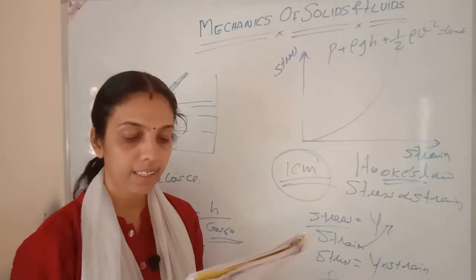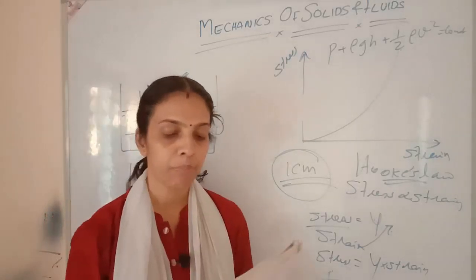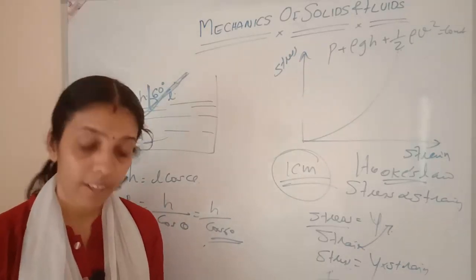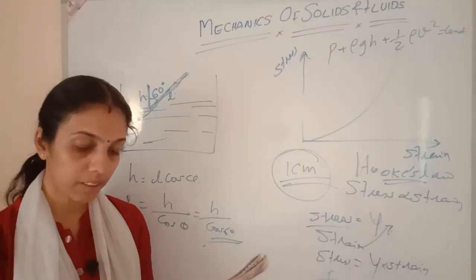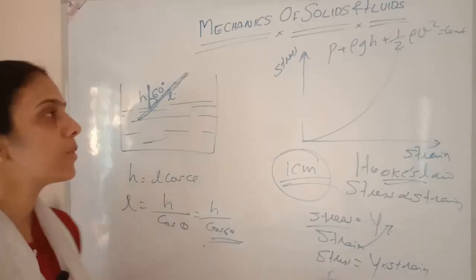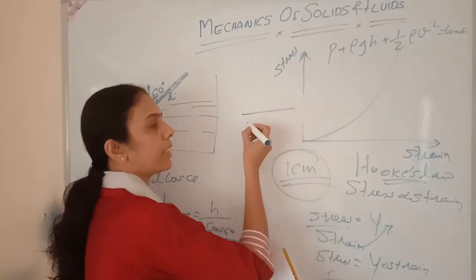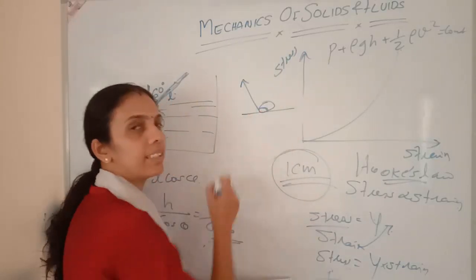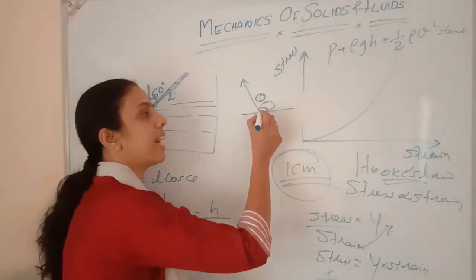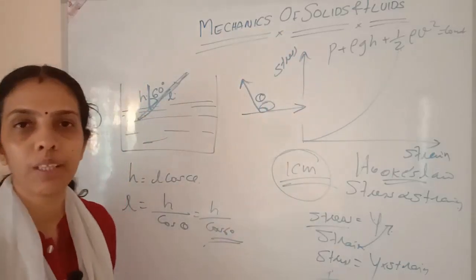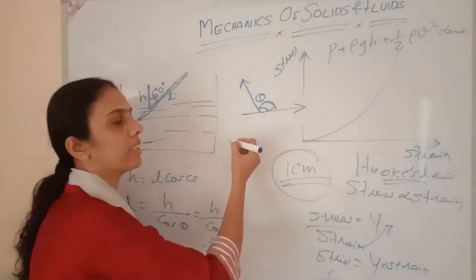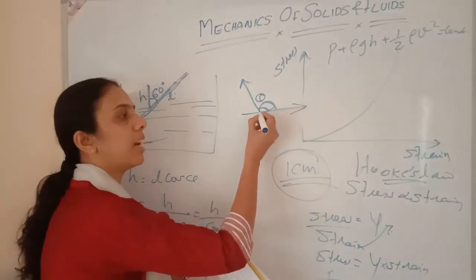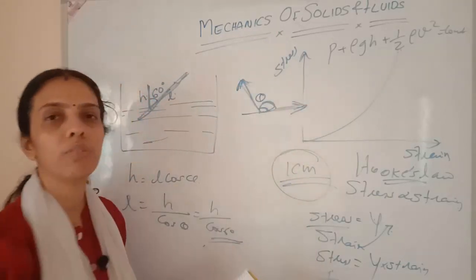A liquid surface behaves like a stretched elastic membrane — that property is surface tension. Define the angle of contact and its value for pure water with glass. Angle of contact is the angle between the surface of contact and the tangent to the liquid surface, measured inside the liquid. For pure water with glass, it is approximately 0°.